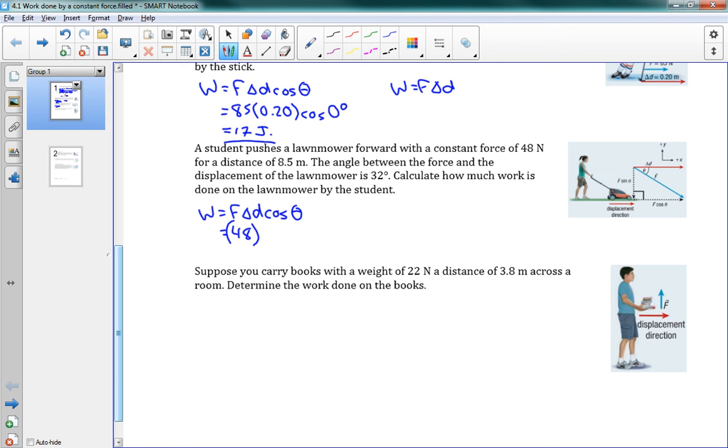And our numbers here are 48 newtons times 8.5 meters, cosine, and our angle was 32 degrees. You just put that in your calculator, and you get a value of 3.1 times 10 to the 2 joules. Good.